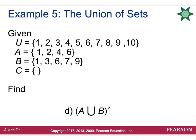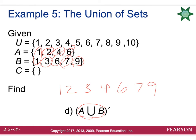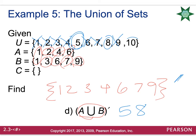One last example of union — this one includes parentheses. Make sure you complete what is in the parentheses first. First we need to find A union B, which was {1, 2, 3, 4, 6, 7, 9}. Then we move outside the parentheses and figure out the complement. The complement is going to be anything in the universal set that is not 1, 2, 3, 4, 6, 7, or 9. That would leave us with 5, 8, and 10.